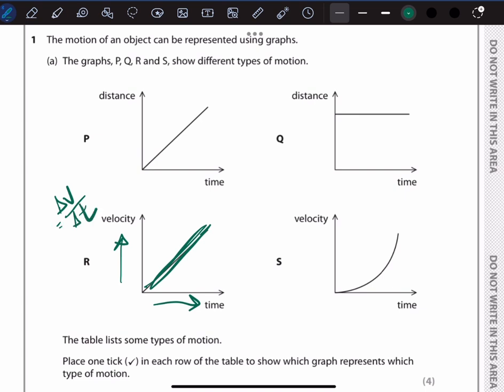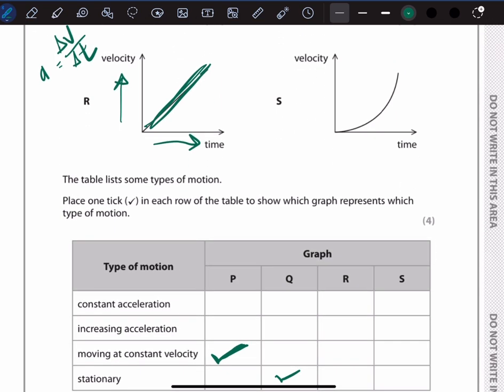is the change in velocity over the change in time, which means you are accelerating. And the gradient of any graph with a straight line must be a constant value. So we tick constant acceleration for graph R.